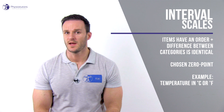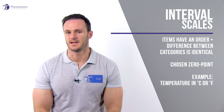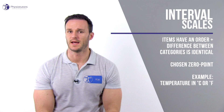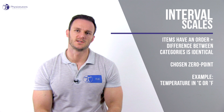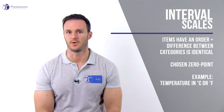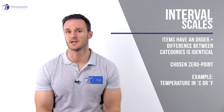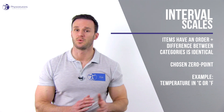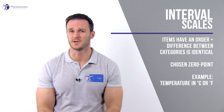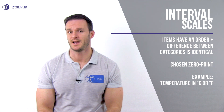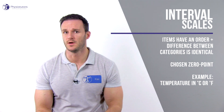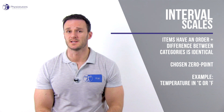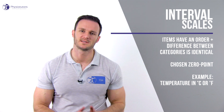On interval scales there is an order and the difference between each category is identical — pretty easy to remember as interval itself means space in between. At the same time, there is no real zero point on interval scales, but a chosen zero point. The classic example is temperature measured in degrees Celsius or Fahrenheit. The difference between 20 and 30 degrees Celsius and 10 and 20 degrees Celsius is both 10, so the intervals are identical. However, zero degrees Celsius does not mean the absence of a value — it's just another number used on a scale. This also means that we cannot say that 20 degrees is twice as warm as 10 degrees. Negative numbers also have a meaning.